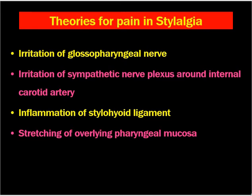What are the theories of pain in Stylalgia? The most common cause is irritation of the glossopharyngeal nerve, which usually presents as glossopharyngeal neuralgia. Next is irritation of the sympathetic nerve plexus around the internal carotid artery, which leads to pain. And next is inflammation of the stylohyoid ligament and stretching of the overlying pharyngeal mucosa by the elongated stylohyoid ligament that compresses or presses on the tonsil.